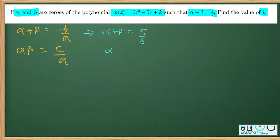We are given the difference relation. As you can see in the question, alpha minus beta is 1 by 6.